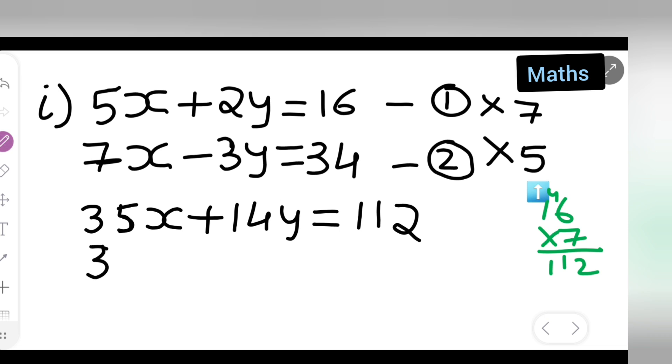So write down 35x plus minus. Since you all can see minus sign is there then 3 times 5 are 15. So write down minus 15y is equal to, now I will have to multiply this 34 by 5. So 5 times 4 are 20. 5 times 4 are 20, 5 times 3 are 15, 16, 17, 170. So 170 you will get.